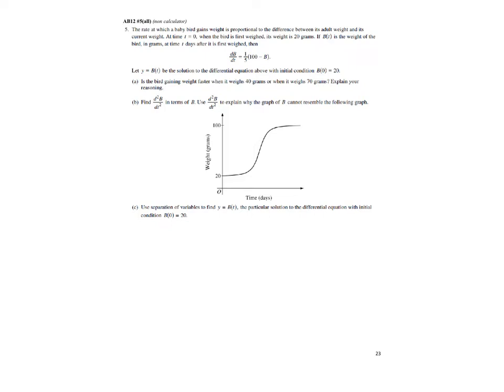If b of t is the weight of the bird in grams at time t days after it's first weighed, then db/dt is given by the following. Now, one quick thing to notice: it says the baby bird gains weight proportional to the difference between its adult weight and its current weight. Proportional means directly proportional—here's our constant of variation.